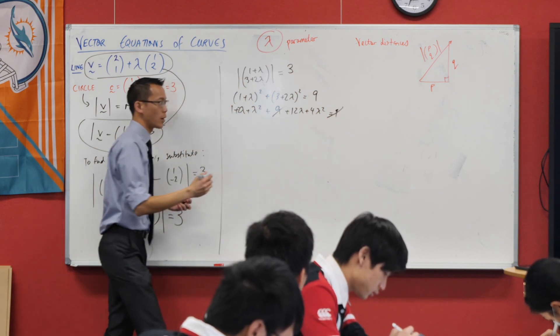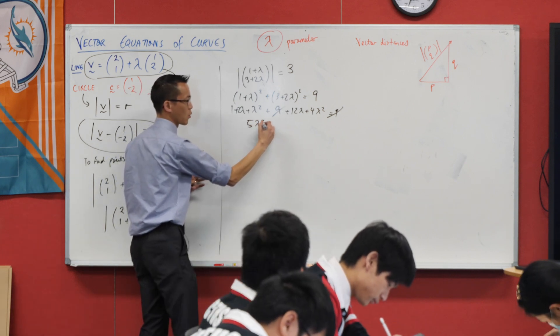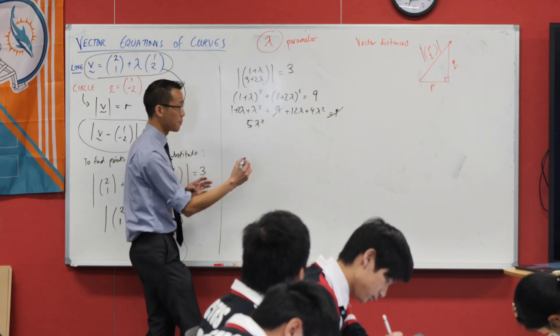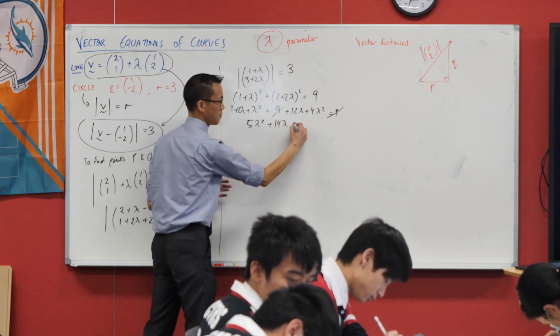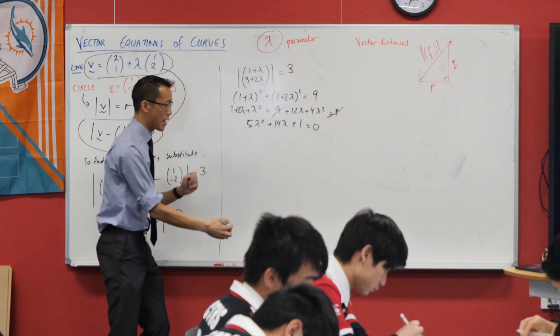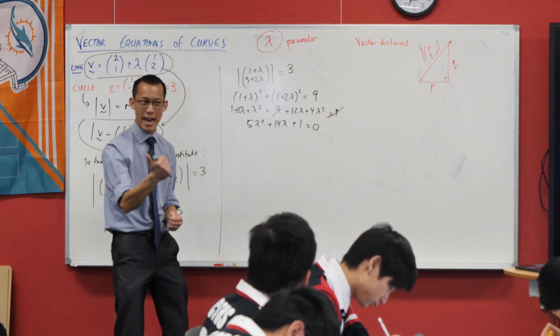Let's get this in a reasonable order, shall we? Five lambda squared. What's my lambda term? Fourteen lambda. What's my constant? Just the one. So what I've got here, this quadratic, I've got an A, I've got a B, I've got a C. How do we get an axis of symmetry out of an A, a B, and a C?